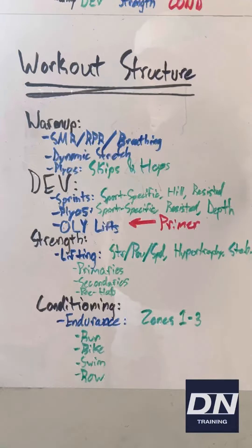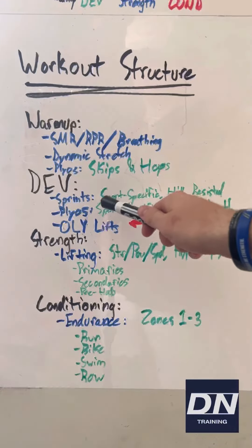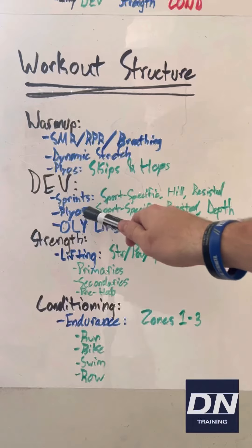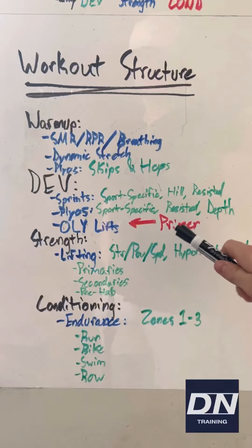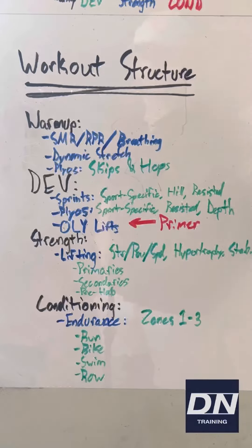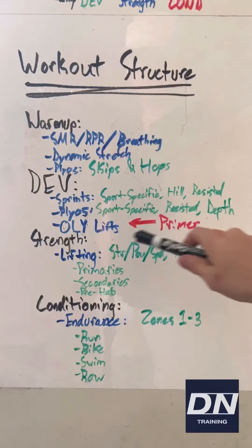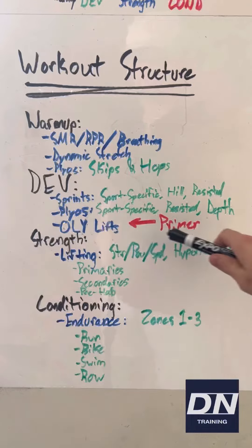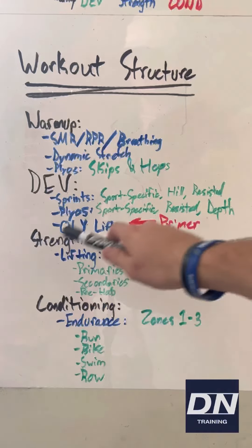As soon as we get to our developmental phase, that's where we do the majority of our more technical or more intense movements — all of our sprinting work, all of our plyos, and all of our Olympic lifts. Basically anything that is high-intensity or sports-specific. Our Olympic lifts are also gonna count as our primer for our strength section.